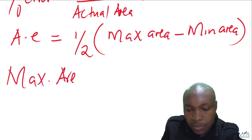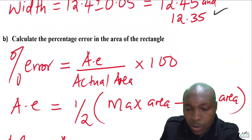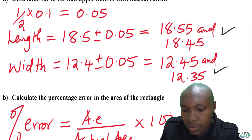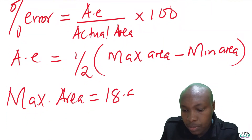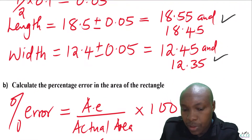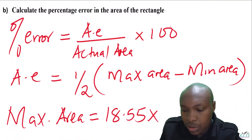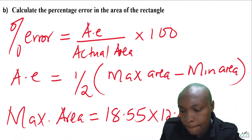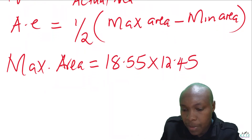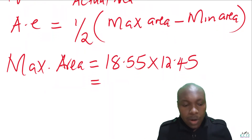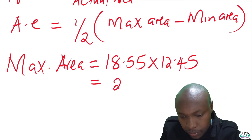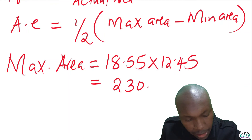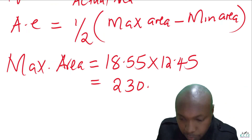The maximum area is obtained using the upper limits. So we calculate 18.55 multiplied by 12.45. Working this out using a calculator gives a maximum area of 230.9475.